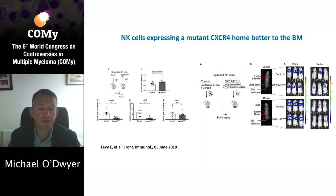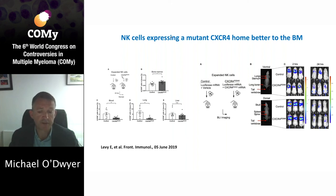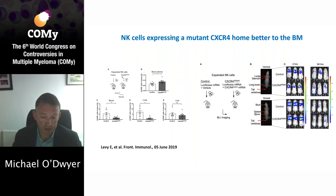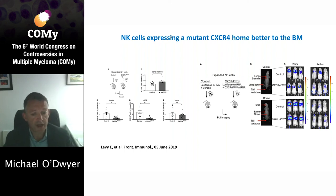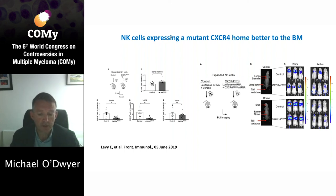Finally, adoptively transferred NK cells need to be able to traffic to the site of the tumour, or to the bone marrow as in multiple myeloma. This is influenced by the expression of adhesion molecules and chemokine receptors, especially CXCR4, on the infused NK cells. Data from Rick Childs and Matthias Carlson's group show that NK cells engineered to express a mutated form of CXCR4, as seen in WHIM syndrome, in which CXCR4 is constitutively active, home more efficiently to the bone marrow in a murine model, which could potentially lead to better disease control.